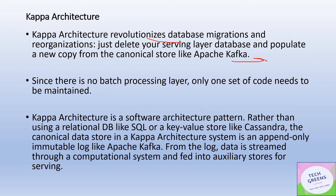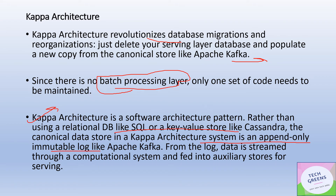Since there is no batch processing layer, you don't have to maintain two separate codebases and two separate code tracks — there is only one codebase, which is much easier to maintain. An important point to reiterate: rather than using a relational database like SQL or a key-value store like Cassandra, the canonical data store in Kappa architecture is an append-only immutable log, which can be implemented with Apache Kafka. This makes database migration straightforward.